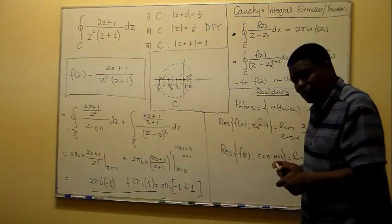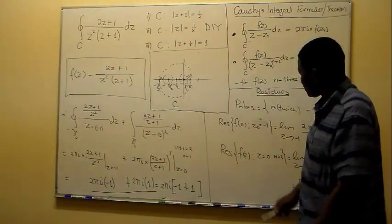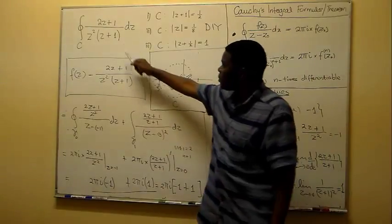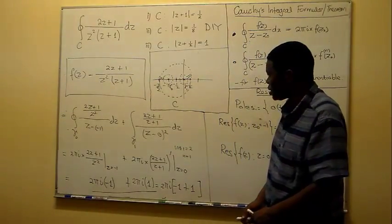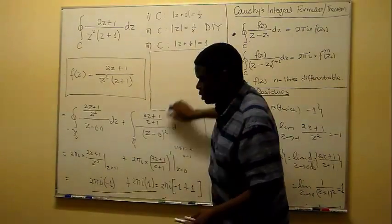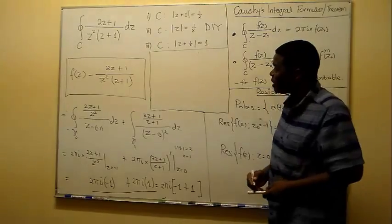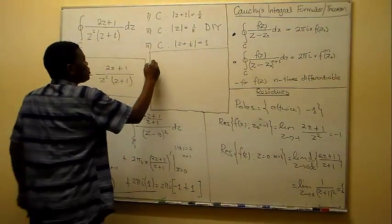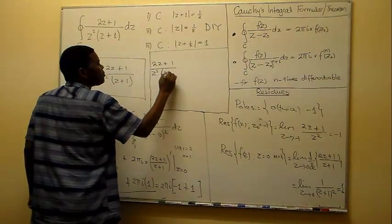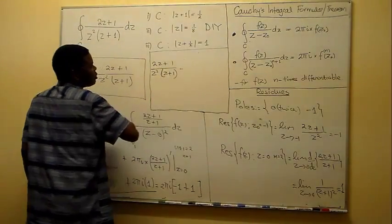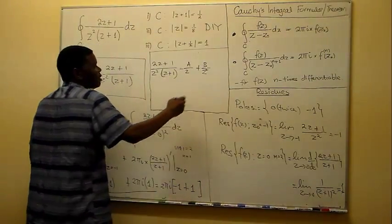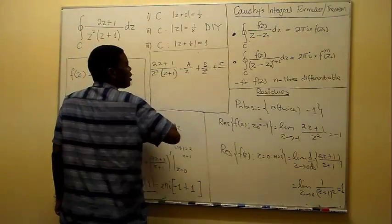I hope you can see how you can approach these problems using either the Cauchy integral formula, the residue theorem, or even partial fractions. What we want to do here is to attempt to use partial fractions: we take (2z + 1) over [z-squared times (z + 1)] and write it in the form A/z + B/z-squared + C/(z + 1).